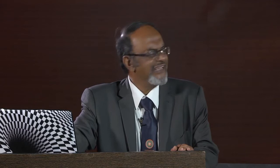The energy meter in your house — the meter which tells how many units you have consumed — is an instrument which measures the total quantity delivered over a period of time. These types of instruments are called integrating instruments. So those are three very broad classifications of instruments: indicating, recording, and integrating.